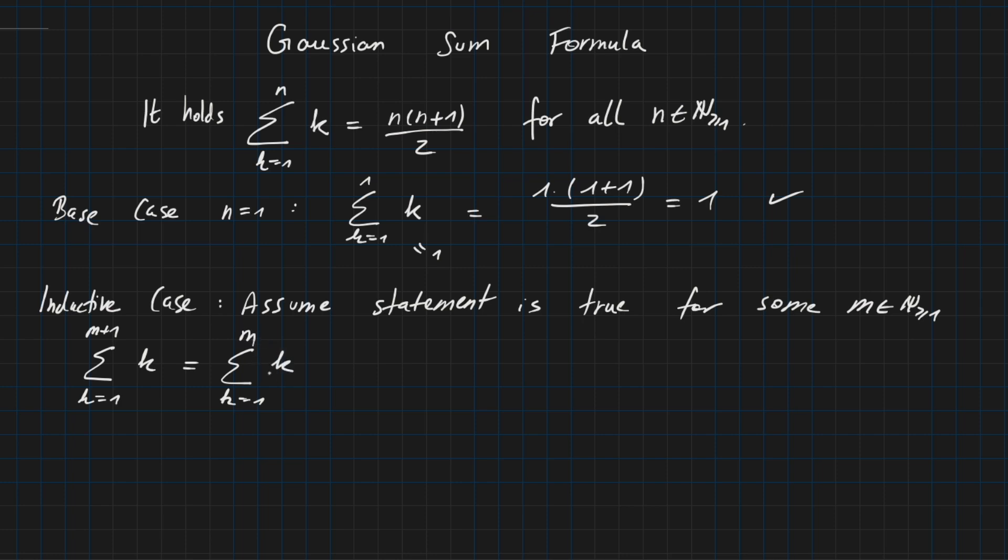And here on the right hand side we are missing one term because we reduce the number of terms on the right hand side by this last addend here, which is m plus 1. Because if we are inserting m plus 1 here for k we are getting m plus 1. So on the right hand side we need to add m plus 1 to have this equality here.